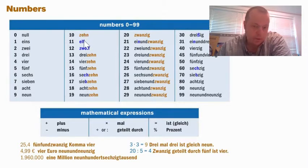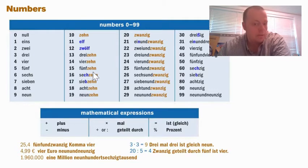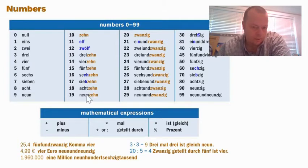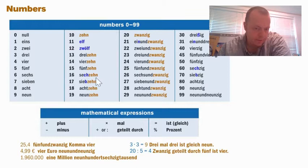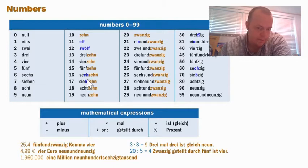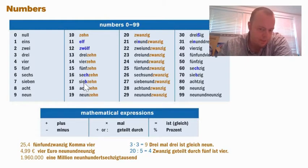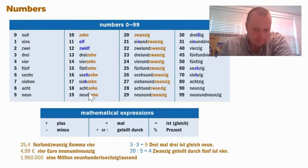Elf is 11, then 12, 13, 14, 15, 16, 17, 18, 19. Notice that after 13, it's just the number and then '-zehn.' There's a slight difference — instead of 'sechs' plus 'zehn,' the 's' sound gets kind of taken away by the 'z' in 'zehn,' giving us 'sechzehn.' Then you have 'siebzehn' — not even the full 'sieben,' and 'zehn' is the equivalent of '-teen' in English.